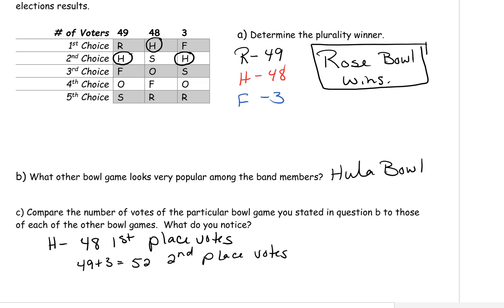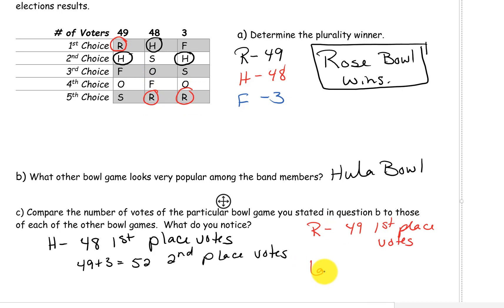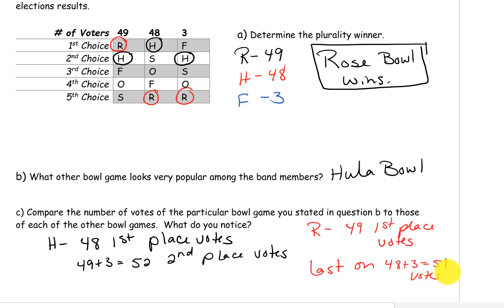The other bowl that's interesting to compare that to is, of course, the winning bowl — which is the Rose Bowl. R was first on 49 ballots, and then it was last place on 48 plus 3, which is 51 ballots or votes. So the winner of our election was last place on 51 ballots.